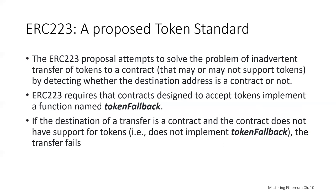Normally if you're sending ETH to a contract, a contract will have a way to handle ETH, but a contract by default doesn't have a way to handle tokens. So ERC-223 detects whether or not an address is a contract, and requires contracts designed to accept tokens to implement a function called token fallback. If the destination is a contract and it doesn't have this token fallback function, the transfer will fail.